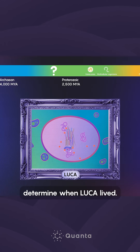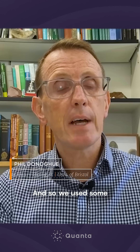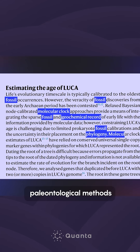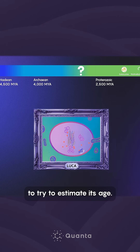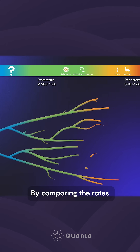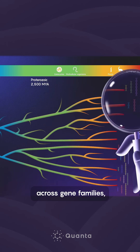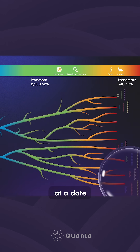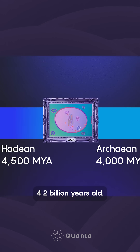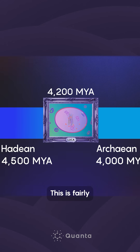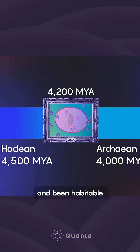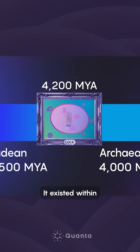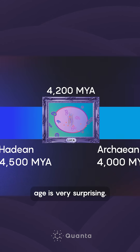For a complete picture, the team also needed to determine when LUCA lived. We used molecular and paleontological methods to try to estimate its age. By comparing the rates of mutation over time across gene families, they were able to arrive at a date. We estimated LUCA's age to be around 4.2 billion years old. This is fairly soon after the Earth would have cooled off and been habitable for life to emerge — LUCA existed within about 2,300–400 million years of Earth forming as a planet. To me, that really ancient age is very surprising.